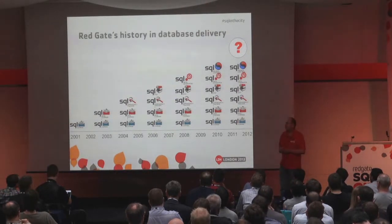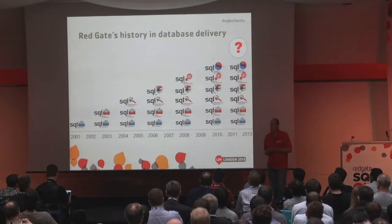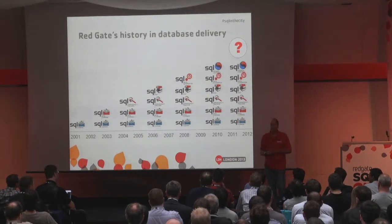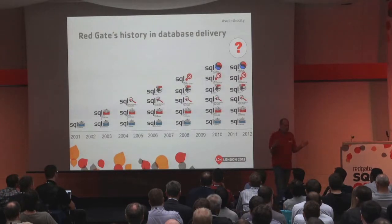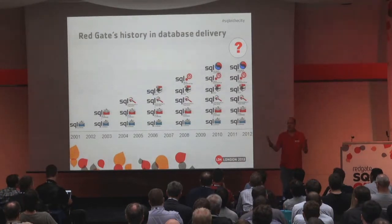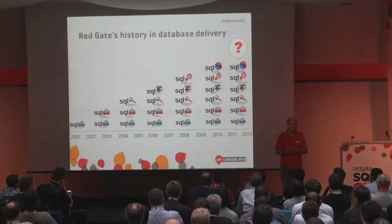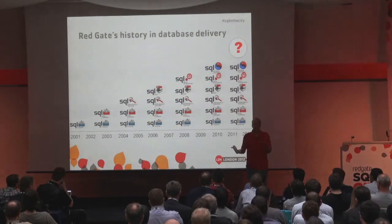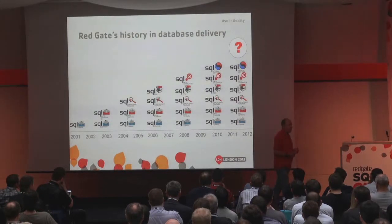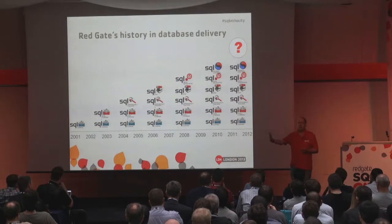Redgate has been in the business of helping people with database delivery for a long time. SQL Compare version 1, more than 10 years ago, was simply a tool that allowed you to compare two databases and see the differences between them. That was great because if you had a test environment and a dev environment, you could look at the differences. Then we realized we could generate SQL scripts to make one database the same as the other — a compare and sync capability.